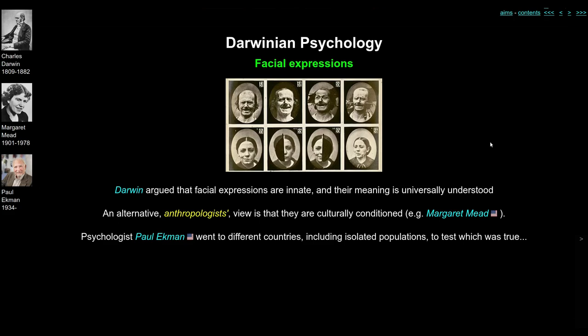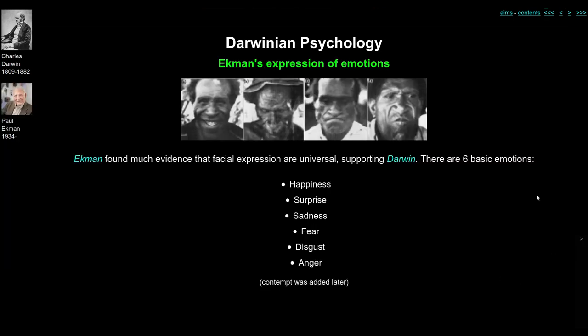Ekman asked whether the same emotions are expressed in the same ways in different countries, or whether emotional facial expressions are culturally conditioned. In this case, Ekman and Darwin tended to be right. Ekman found evidence across many different cultures that there are basically six emotional expressions in the face: happiness, surprise, sadness, fear, disgust, and anger. Later, a seventh — contempt, which probably derived from disgust — was added. Ekman's evidence supported Darwin's view that emotional expressions are universal across human cultures.